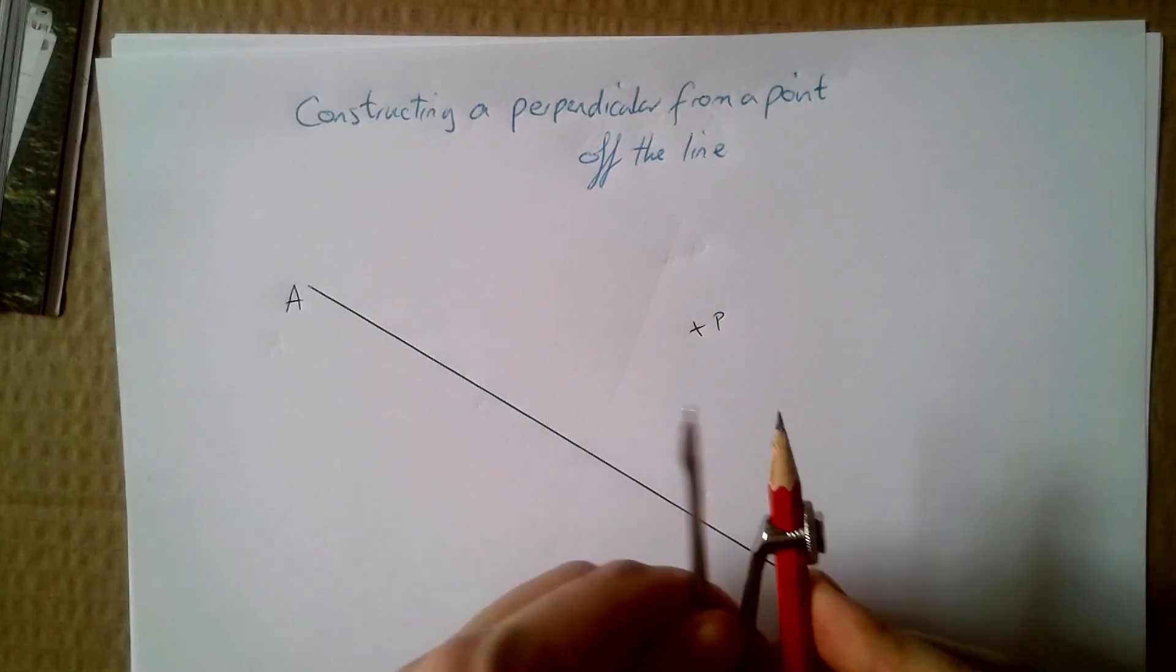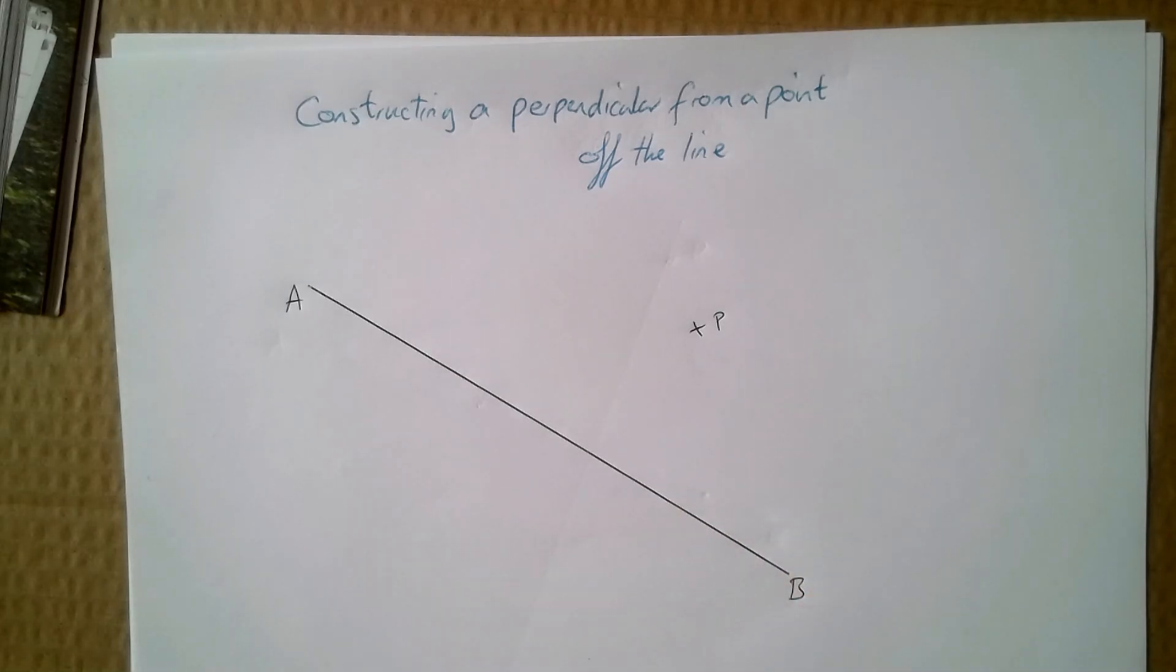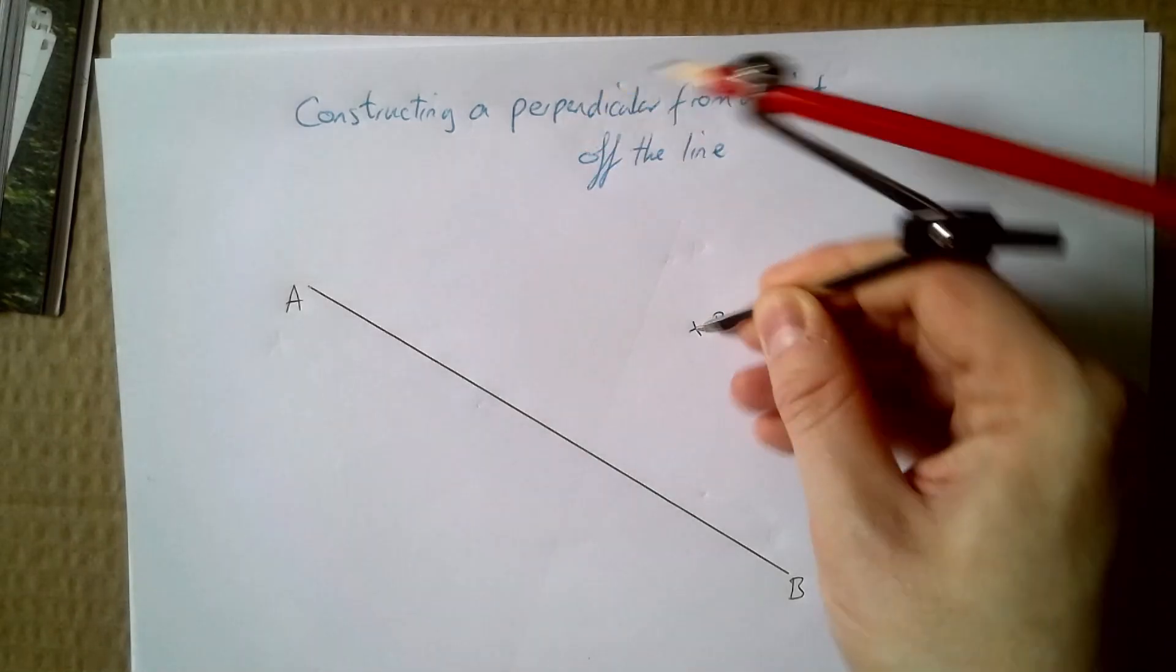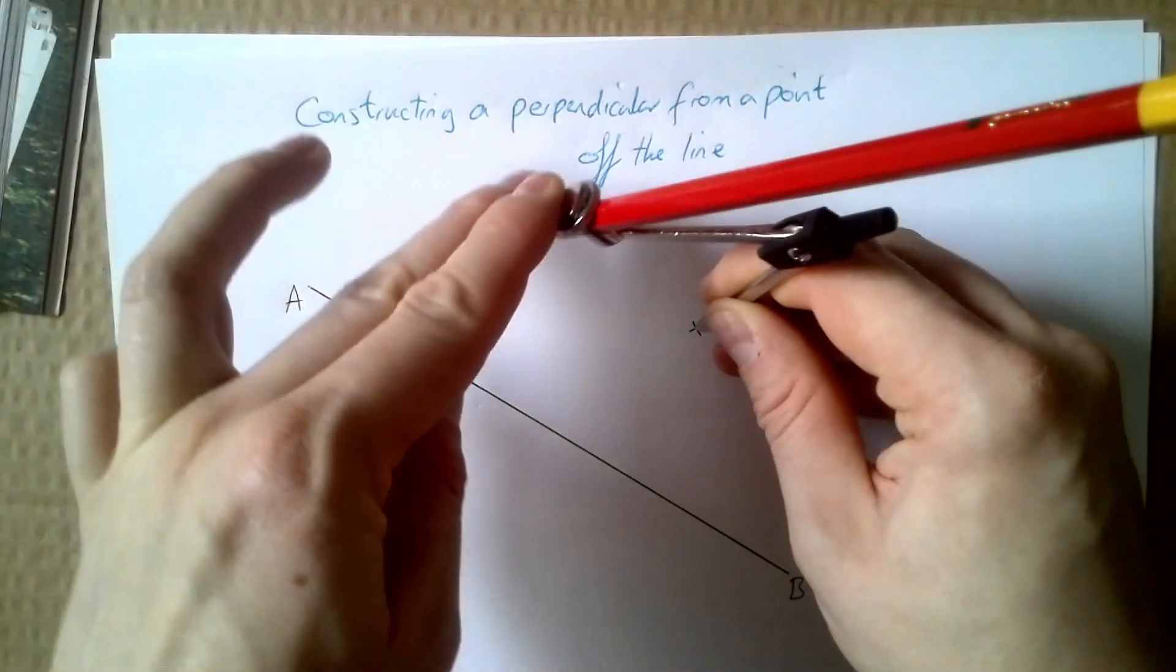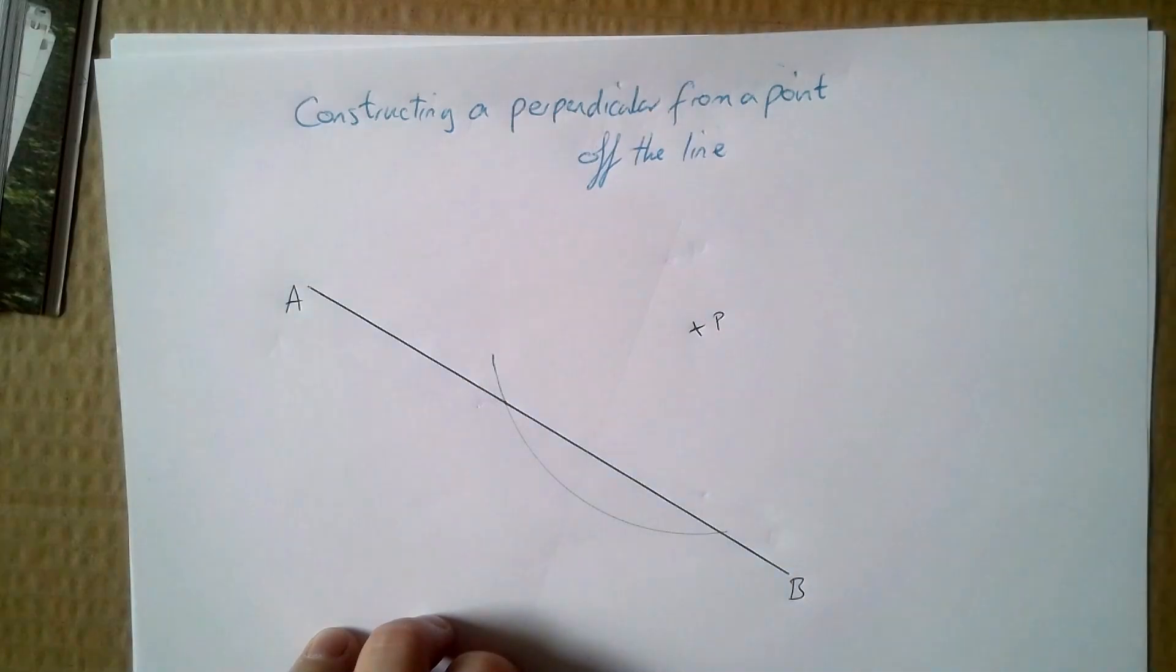I need a compass and I've set mine up correctly. First thing you do, which is the only difference to the normal perpendicular bisector, is starting at P, draw an arc which crosses the line AB. And now these two points here and here, they will be the points that you start your normal perpendicular bisector on.